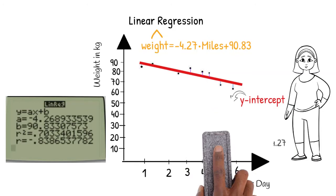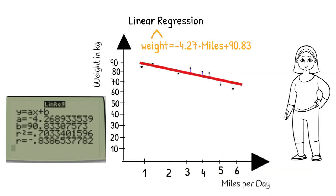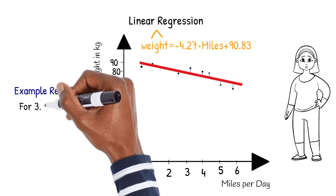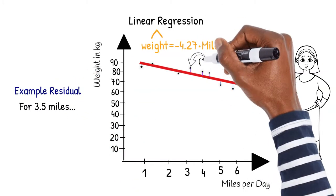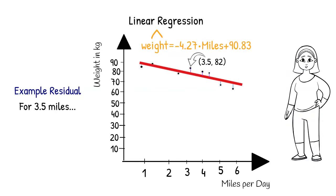Recall that a residual is the difference between the actual data and our predicted value. From our graph, we see that a woman who walks 3.5 miles per day weighs 82 kilograms. If we had to predict the weight of another woman who walks 3.5 miles, we would use our best fit equation.